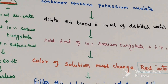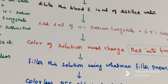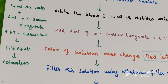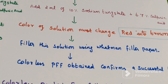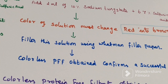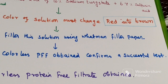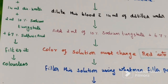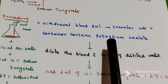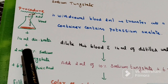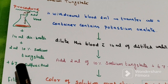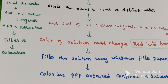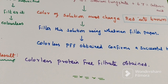If the test is proceeding correctly, the color of the solution must change from dark red to dark brown. After that, we filter using Whatman filter paper. The successful result is a colorless protein-free filtrate obtained after filtration. The brown color changes to colorless, indicating a positive result. As a result, we get a colorless protein-free filtrate.